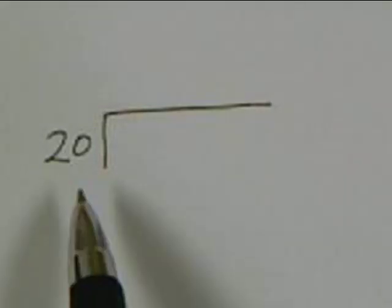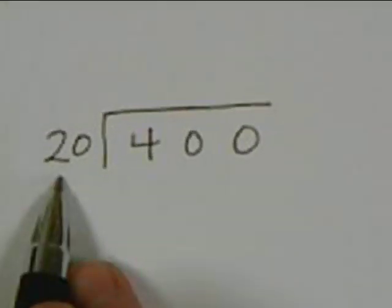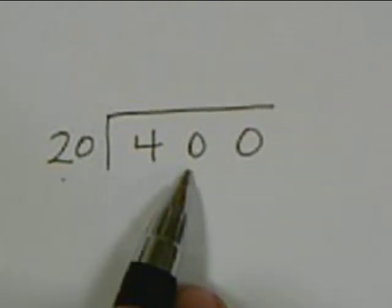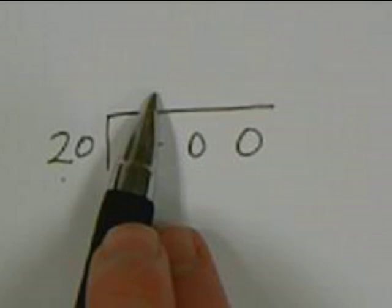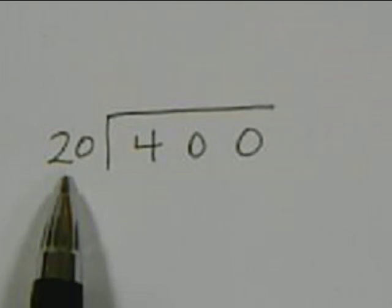This lesson is on long division with two-digit divisors. What I mean by divisors are the numbers that would go outside the box. For example, in this problem, 400 divided by 20, 20 is outside of the box, so 20 is our divisor. 400 is our dividend, and our answer is our quotient. Students need to know that all those numbers have names to them. So these are two-digit divisors.